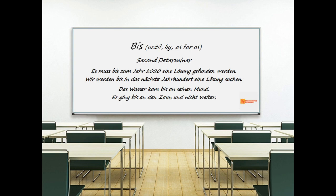It is a peculiarity of 'bis' — and only this preposition — that when a determiner stands between it and the following noun, it must be used together with another preposition, and that second preposition determines the case of the noun. In the examples above there were no determiners, but when there are, a variety of prepositions are used with 'bis'. Example: 'Es muss bis zum Jahr 2020 eine Lösung gefunden werden.' 'Wir werden bis in das nächste Jahrhundert eine Lösung suchen.' 'Das Wasser kam bis an seinen Mund' — the water came up as far as his mouth. 'Er ging bis an den Zaun und nicht weiter.'